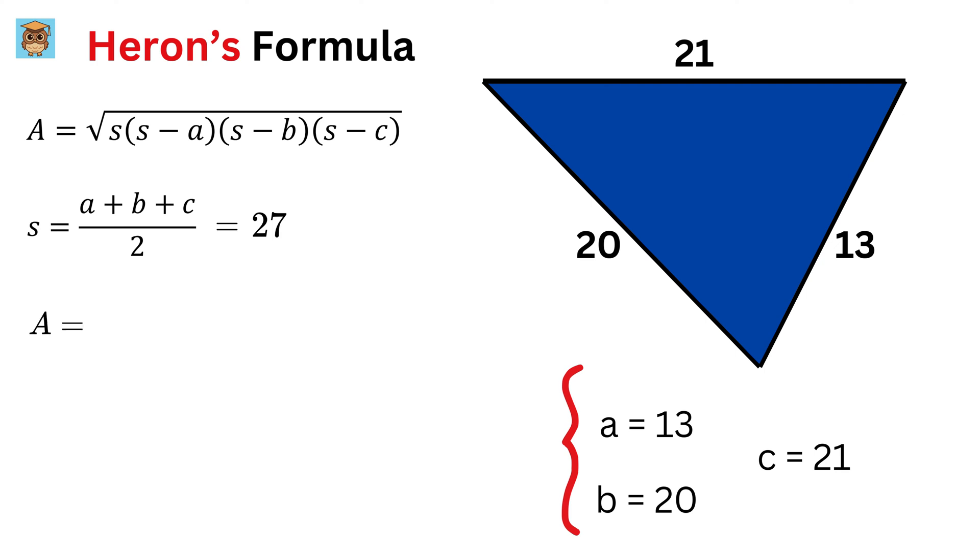So, the area of this triangle equals square root of 27 times 27 minus 13, times 27 minus 20 times 27 minus 21, or the square root of 27 times 14 times 7 times 6.